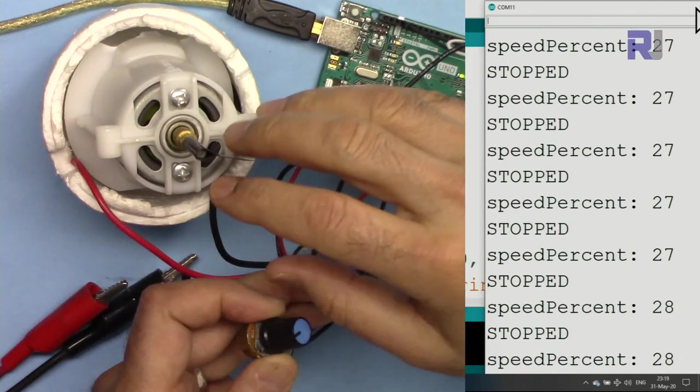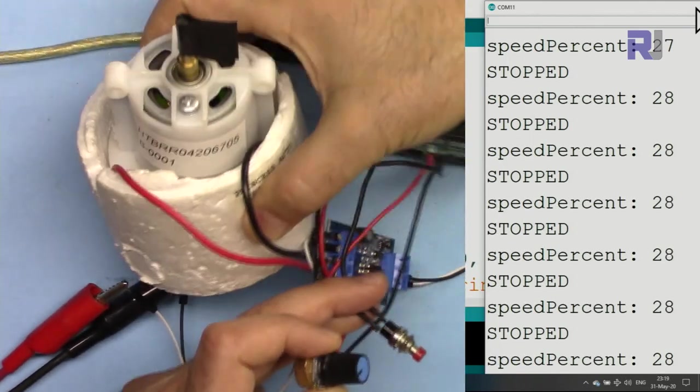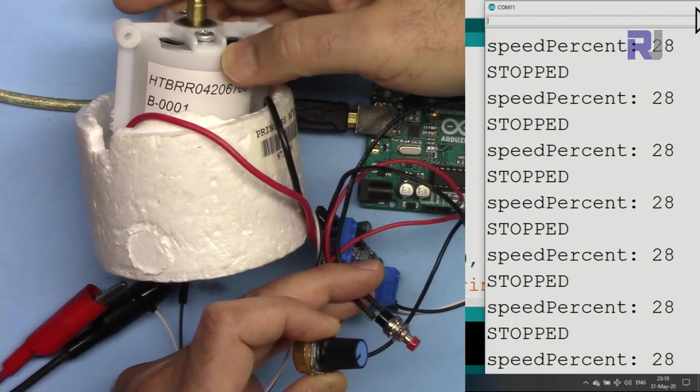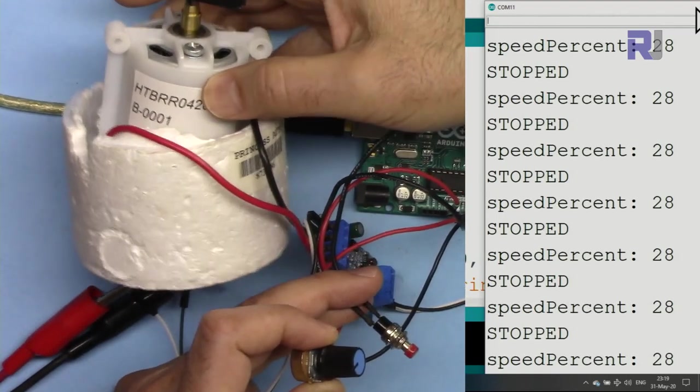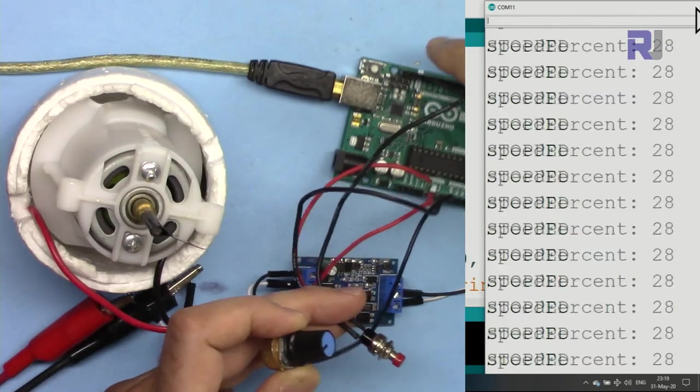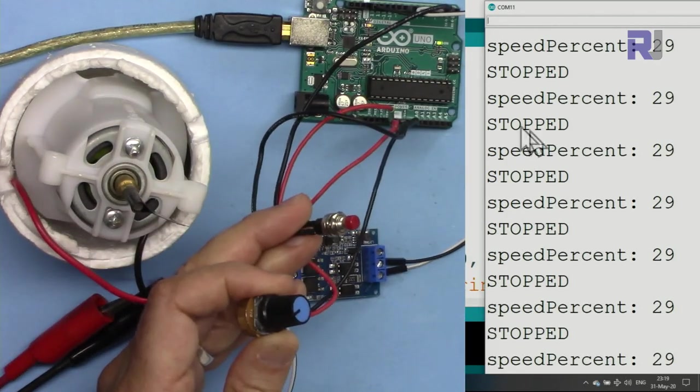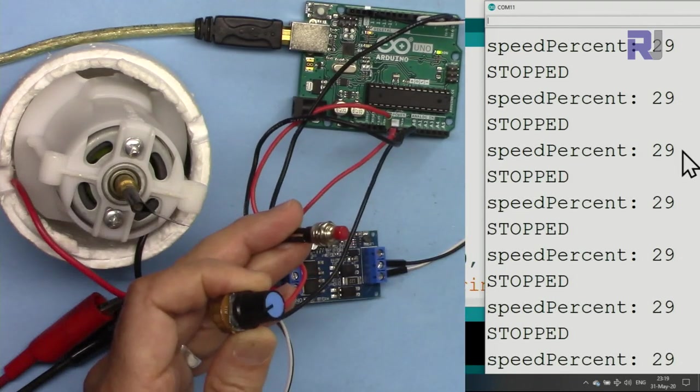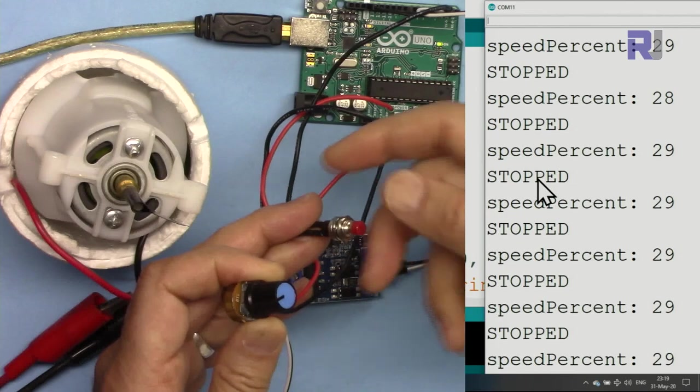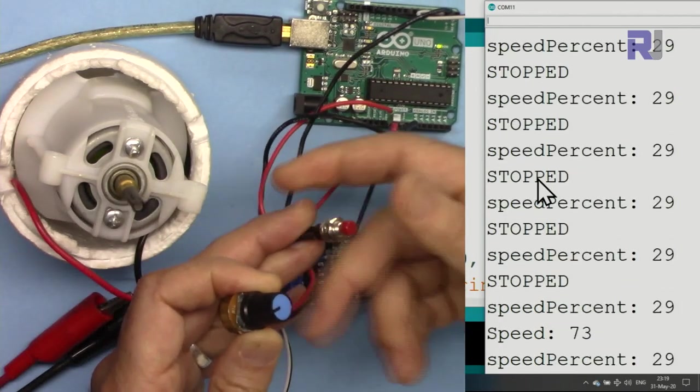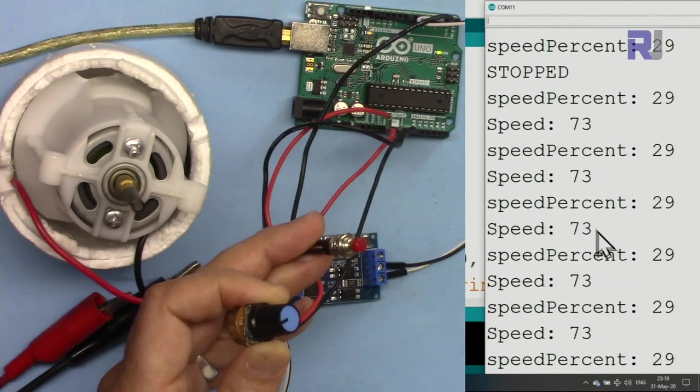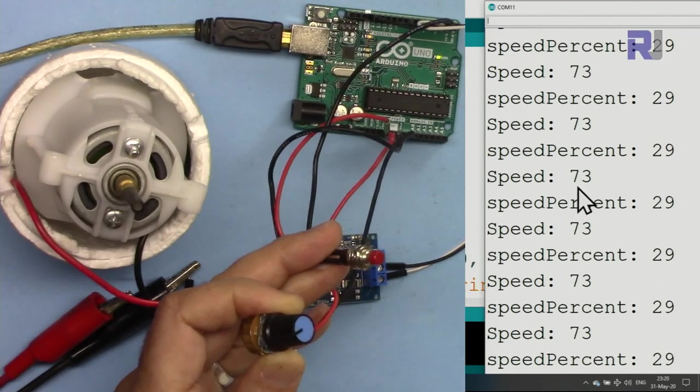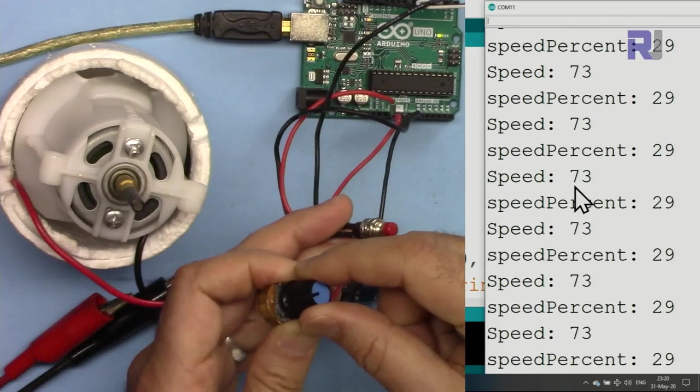Now let me demonstrate it. It's powered up, I'm using this motor for demonstration. This is the model in case you're interested - it is a 12 volt DC motor. Now the serial monitor shows that the setting or the potentiometer is at 29 percent and it is stopped. If I press this now...